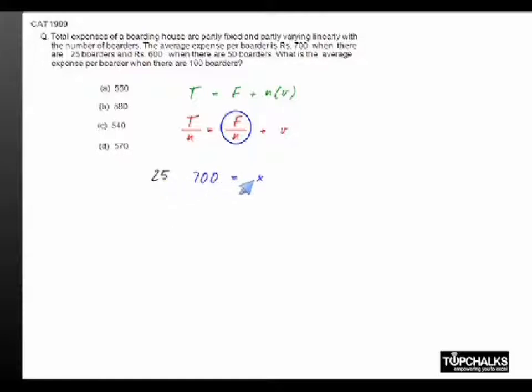Let me call this f by n as x plus the variable cost is b. And when there are 50, this is 600, whereas what will happen to f by n? Because the total number of people is doubling, this must now become x by 2 plus b.